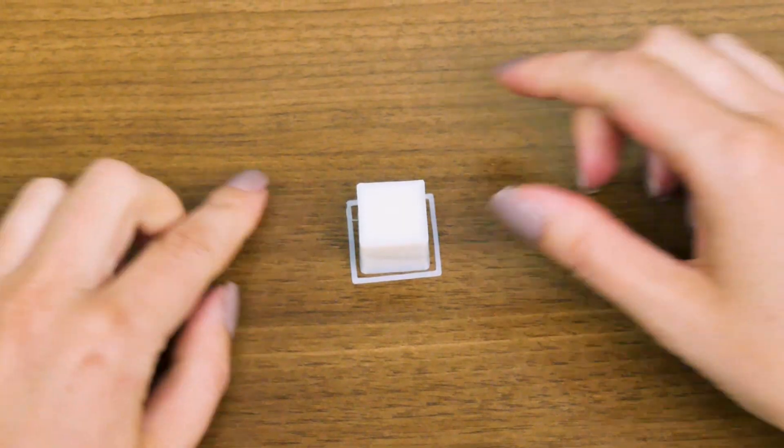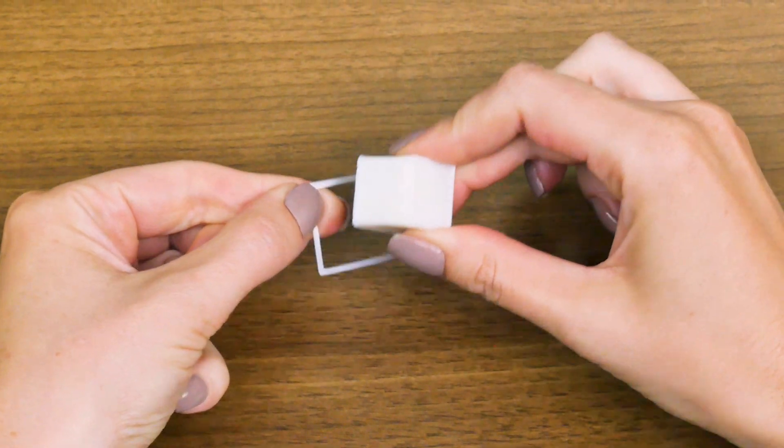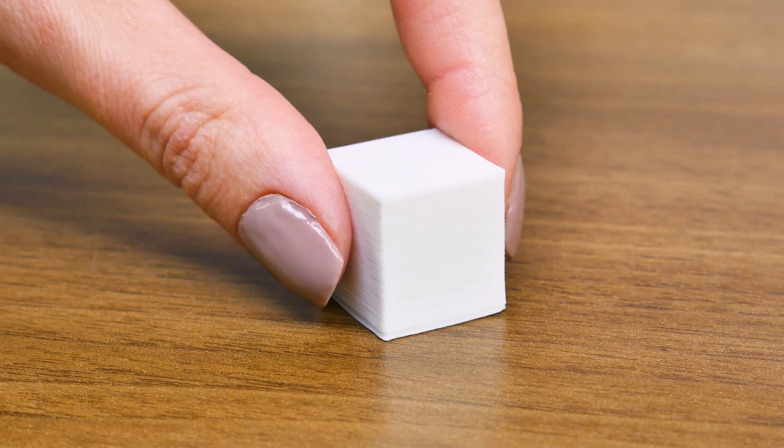Once you have successfully removed the object, snap off any brim or support pieces you may have. Now you have your 3D object.